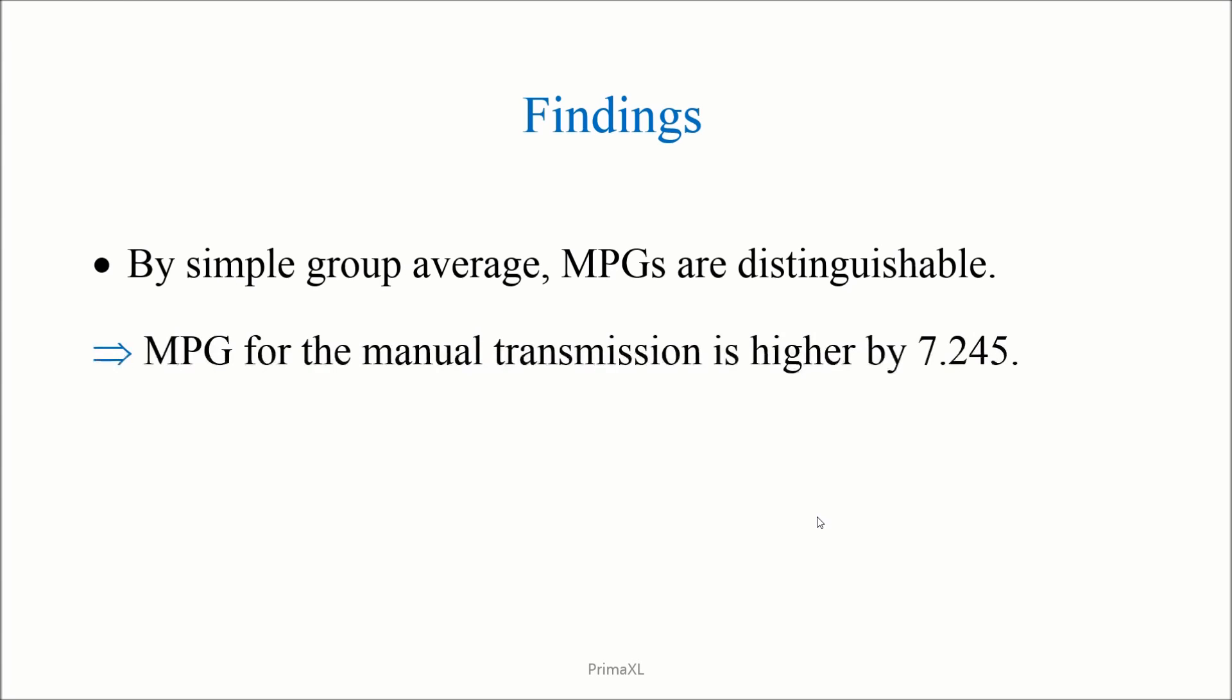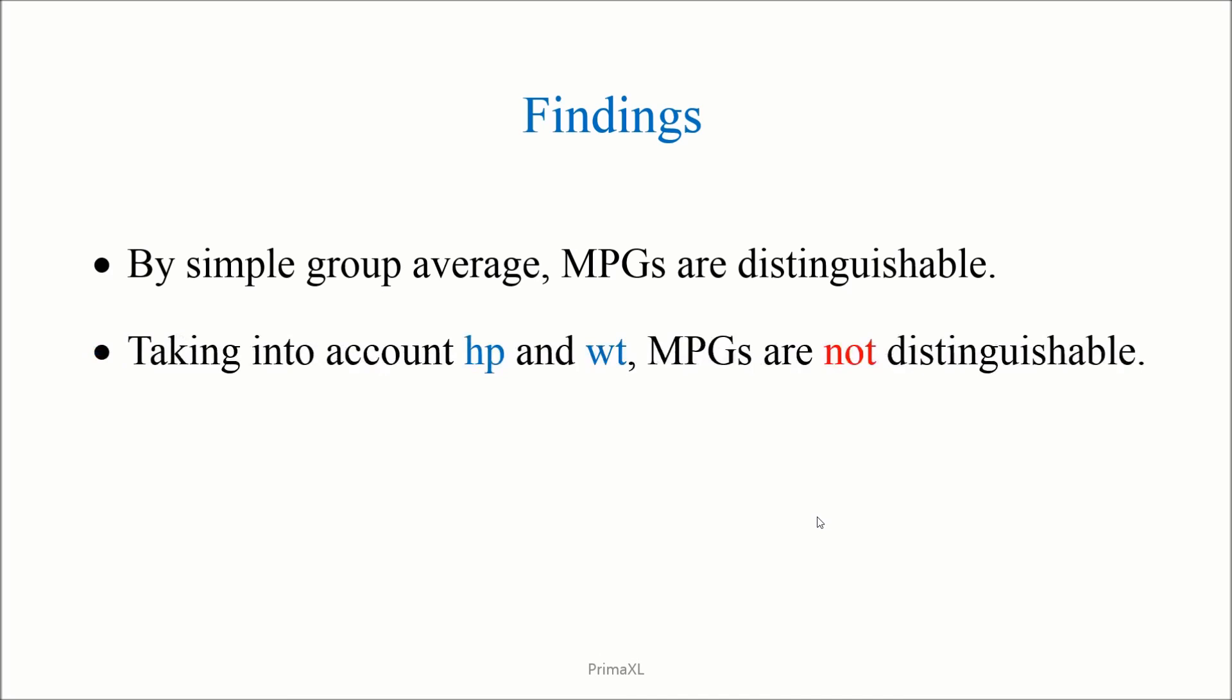Summary. Our findings of today are: by group average or by doing the regression analysis with a single dummy variable, we found that the MPGs are distinguishable. The MPG for the manual transmission is higher by 7.245. However, if we take into account the effect of the horsepower and the weight, the MPGs are not distinguishable anymore.